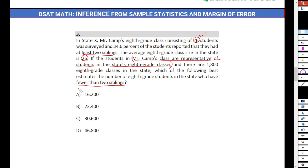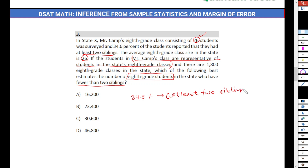We have to find the number of students who have fewer than two siblings. Our sample is taken from eighth grade students — don't forget that. So 34.6% means students having at least two siblings. If you subtract this from 100, that is 100 minus 34.6, this yields 65.4%, and this gives you the percentage of students having fewer than two siblings.